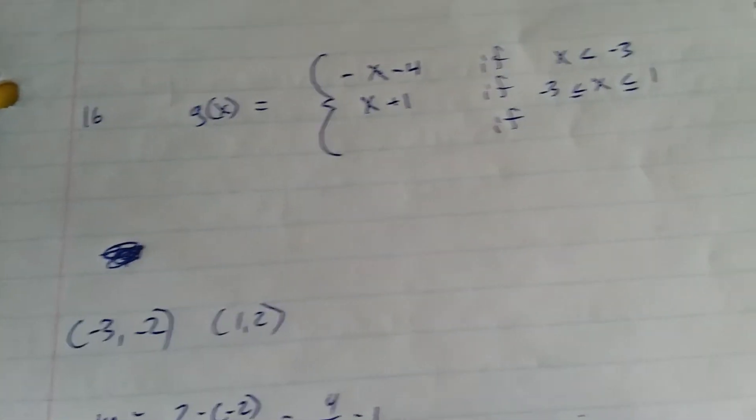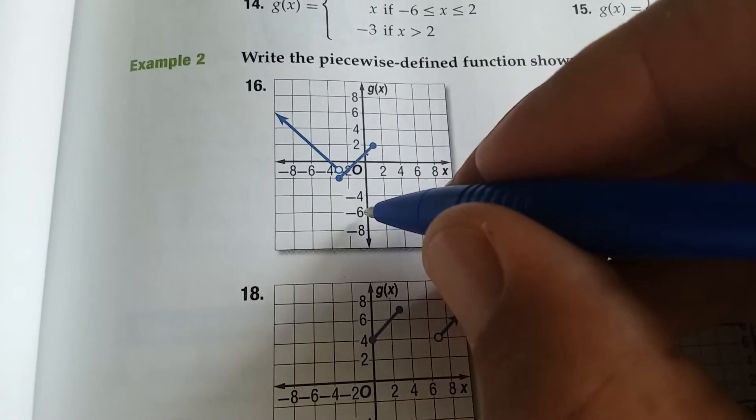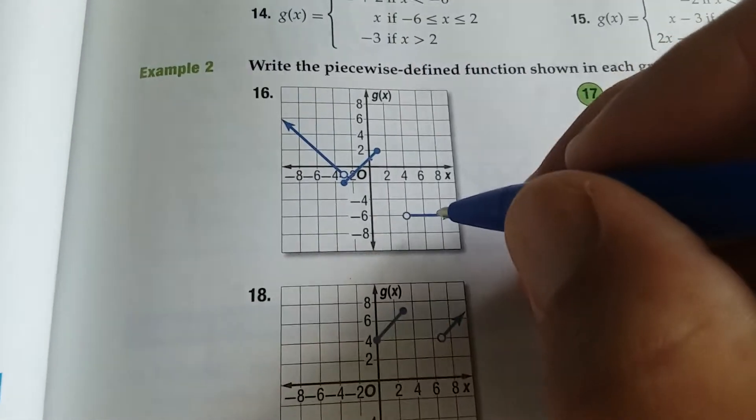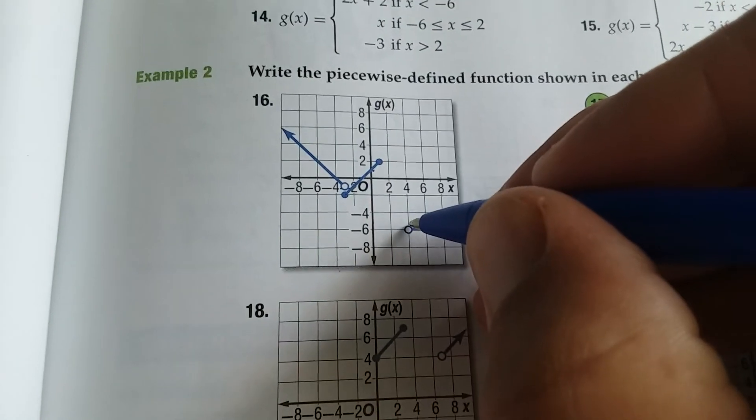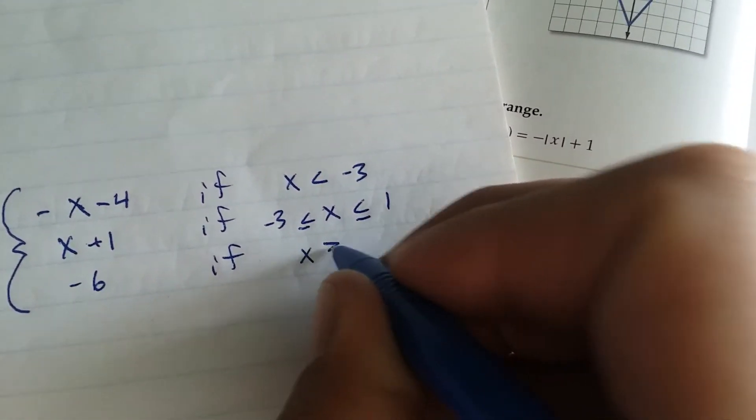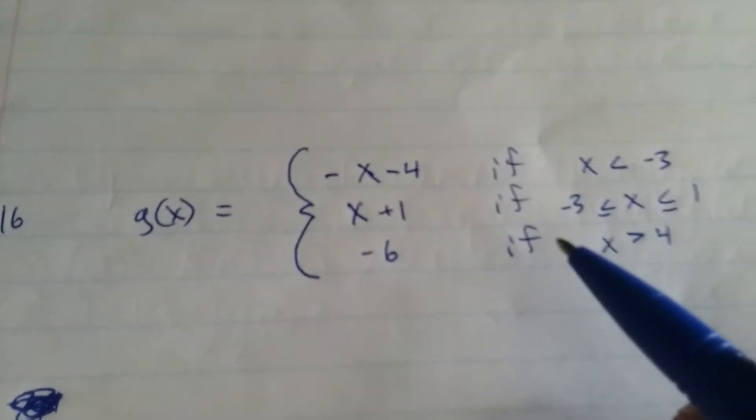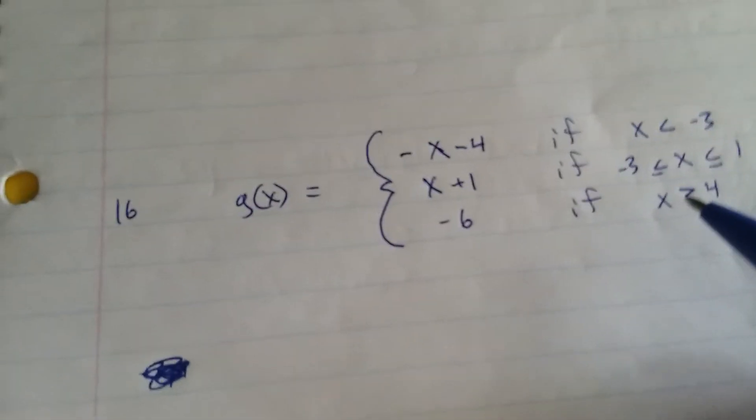And your third piece, your slope is 0. Your intercept would be negative 6, so it would be y equals negative 6. It describes this line, so put negative 6, negative 6 if you are to the right of 4. So if x is greater than 4, with no equal bar here because we have an open circle.